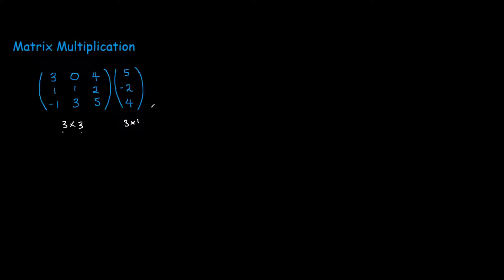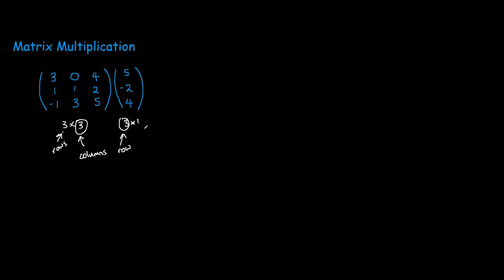Knowing the dimensions is really important because for matrices to be able to be multiplied together, these two dimensions must be the same. So make sure to remember that if the columns of the first matrix match the number of rows in the second matrix, it is possible to find a solution. In any other case, it is not possible.